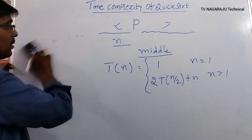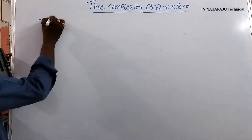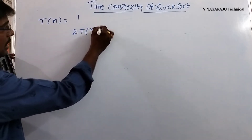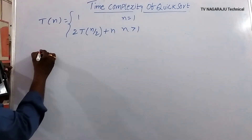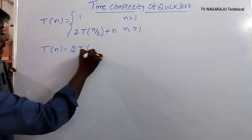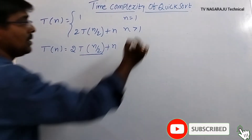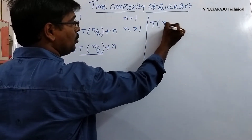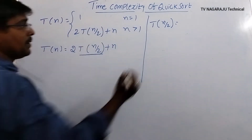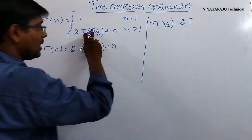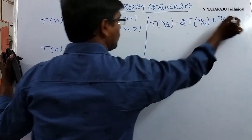Now we will derive the formula for time complexity in the best case, then move to the worst case. T(n) = 2·T(n/2) + n for n > 1. To solve this, substitute: T(n/2) = 2·T(n/4) + n/2, and similarly T(n/4) = 2·T(n/8) + n/4.